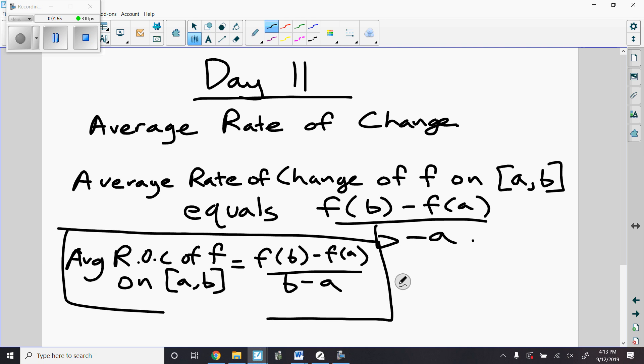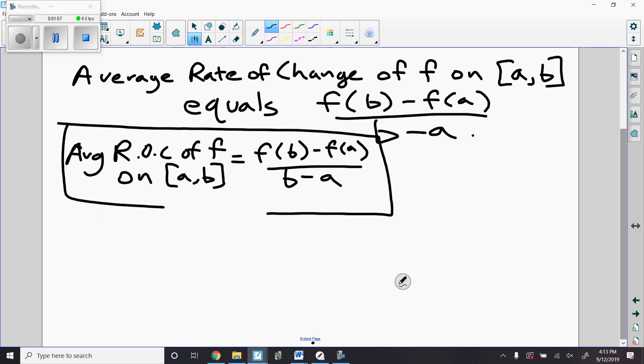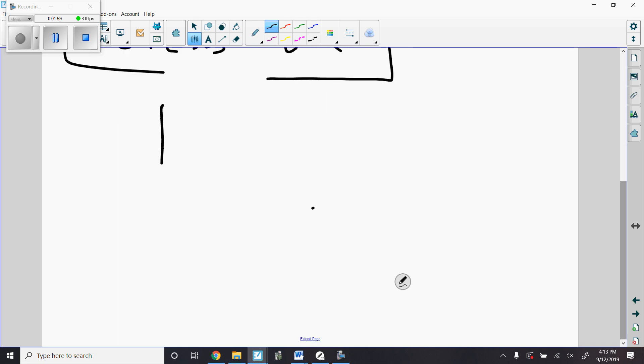Looking at this graphically, it might look like this. So let's say here's my graph. I've got a here and b out here. This is the point (a, f(a)). This is the point (b, f(b)). So let's say that those two are connected. Let's make it a curve.